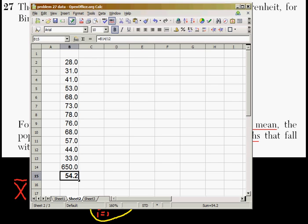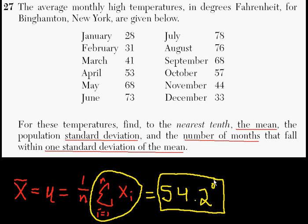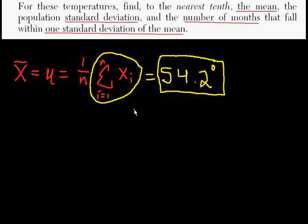Now what we want to do is compute the standard deviation. So we found the mean. The mean is equal to 54.2 degrees. That's the mean. That's part one. Now the formula for standard deviation is a little bit more complicated than the formula for the mean. But follow me on this one. It's not quite so bad.